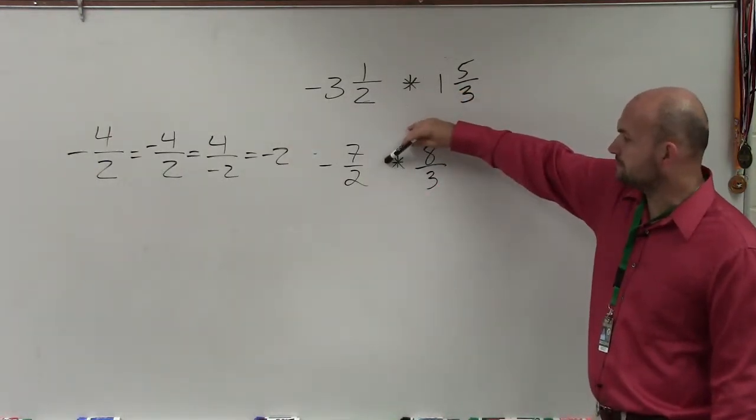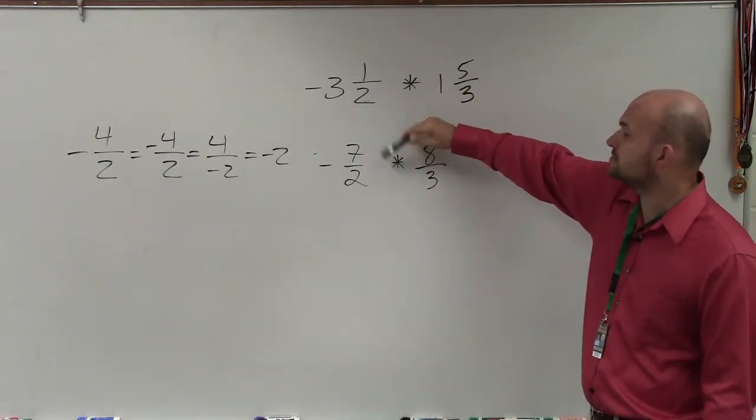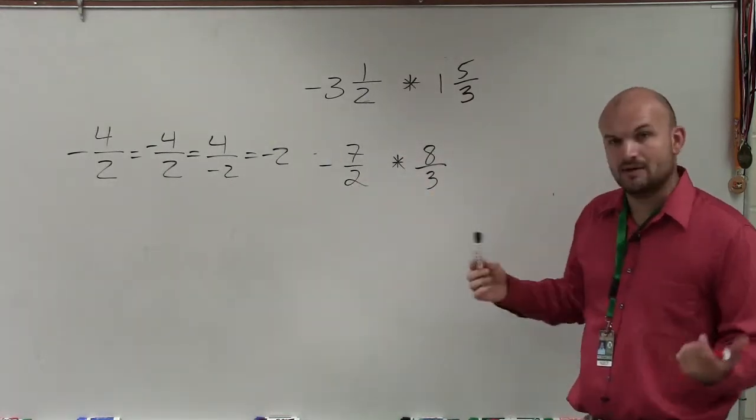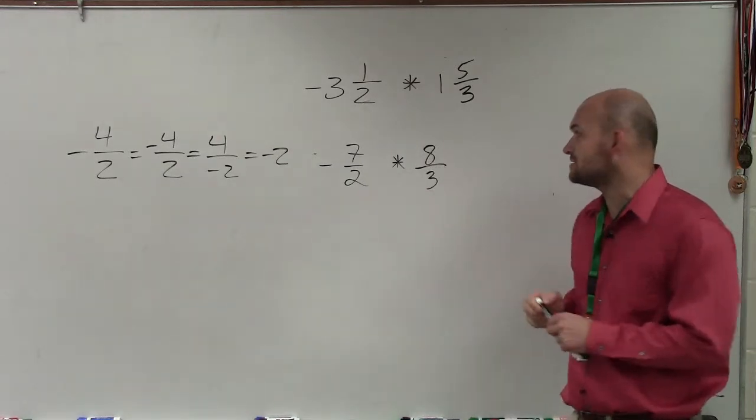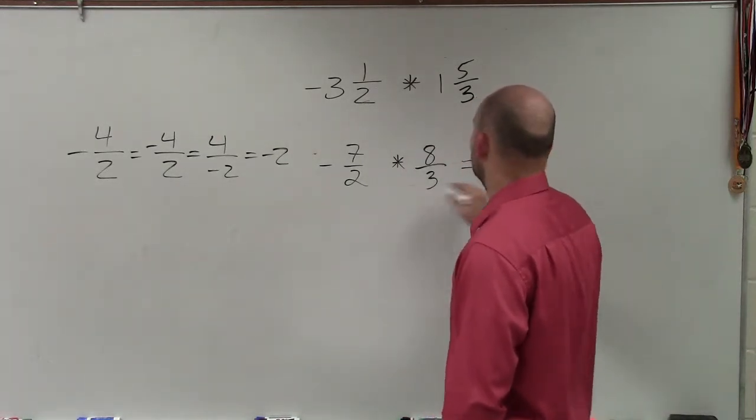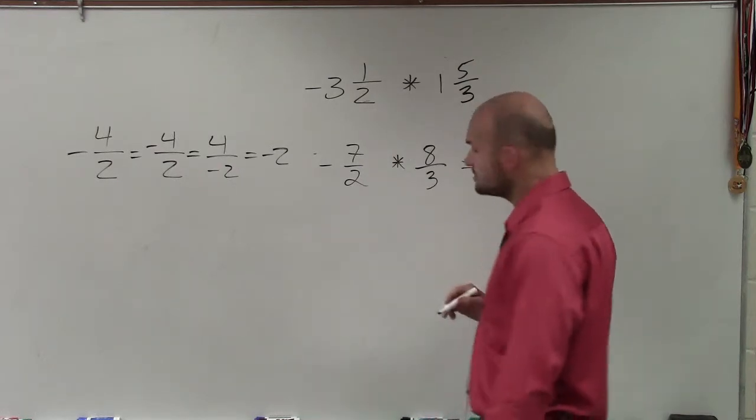So in this case, all I'm simply doing is just going to multiply. And I know I'm multiplying a negative times a positive. So 7 times 8 is going to be 56, over 2 times 3 is 6.